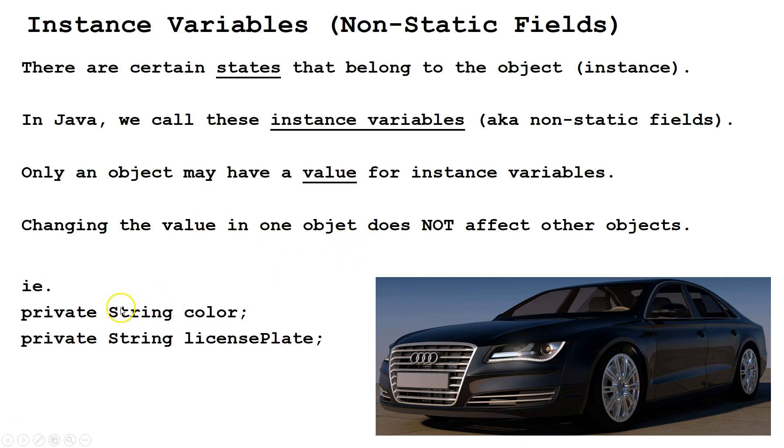So here's an example of some instance variables. They don't have the word static, so we know they're instance variables: color and license plate. And if we change these in one place, they only change for that particular instance.